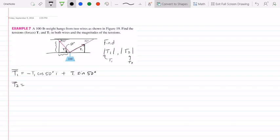Similarly, T2 can be written in terms of its two components. Again, this angle here is going to match this angle up here, so they're both 32 degrees. And since the length of this hypotenuse right here is in fact T2, then I can write that this is T2 times cosine of 32 degrees in the x direction plus T2 sine of 32 degrees in the y direction.